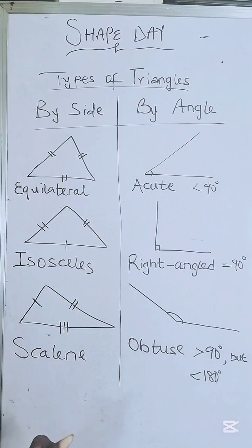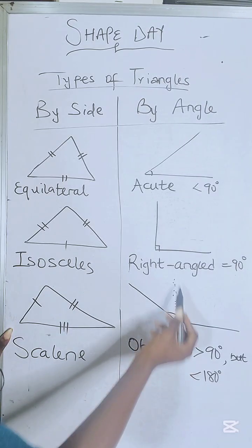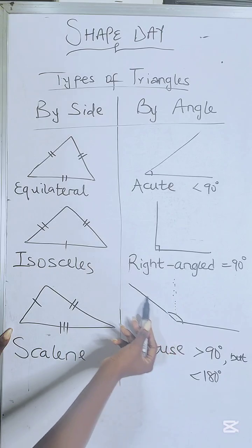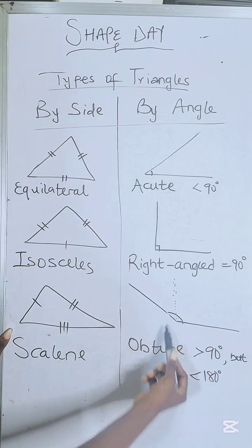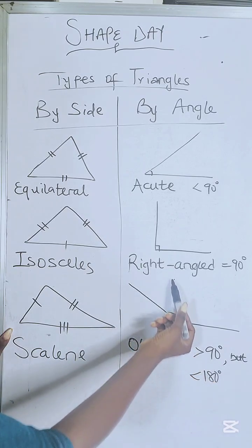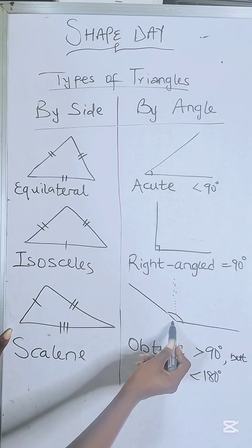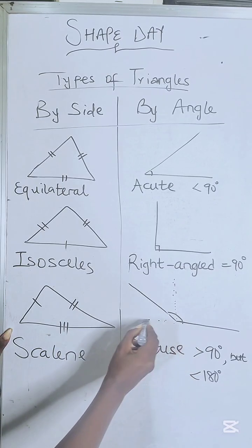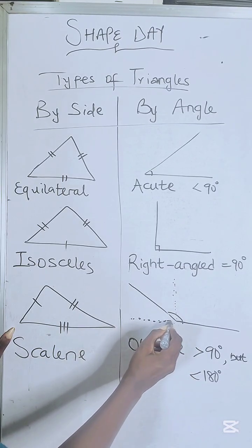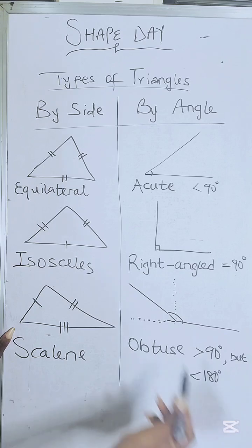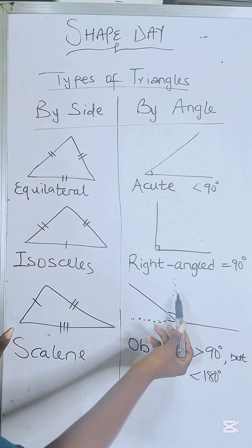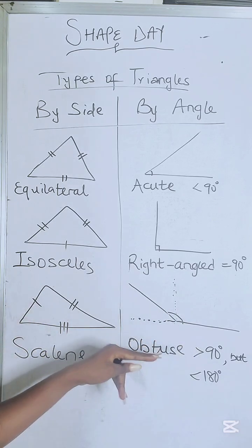And then the third one is the obtuse angle. So it's acting like it wants to lay down. So it is greater than this 90 degrees, but not up to the 180 degrees. It's less than 180. Remember, 180 degrees is your straight line. So it's less than 180, but greater than 90 degrees. And that's what you call the obtuse angle.